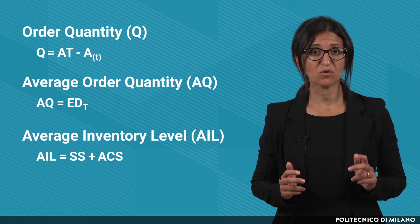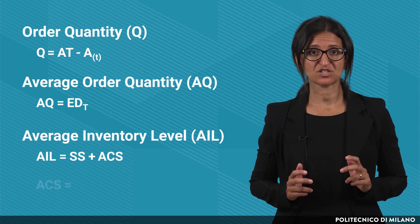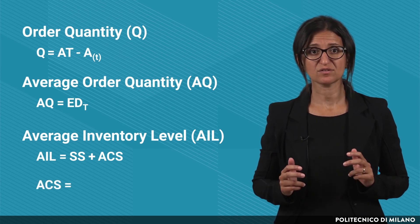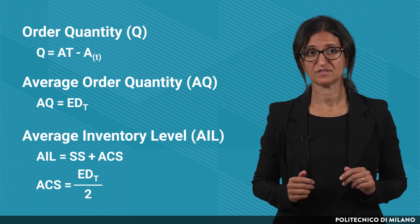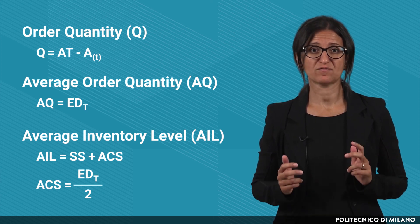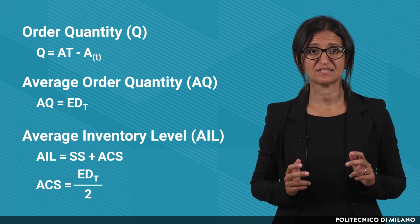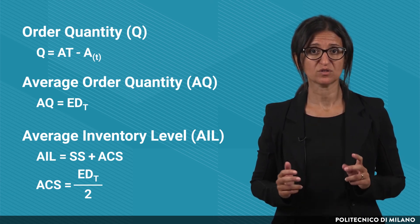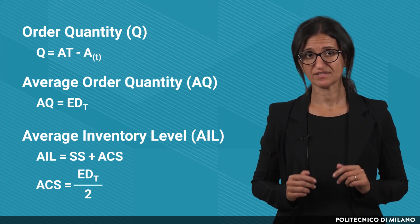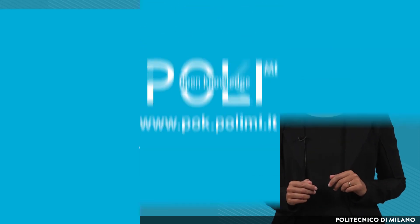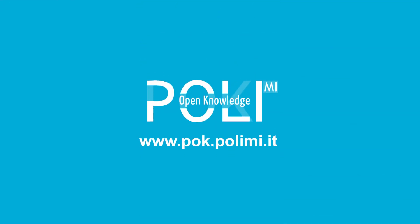In the periodic review model, the average value of the cycle stocks is half the average order quantity, and the average order quantity is the expected demand during t.